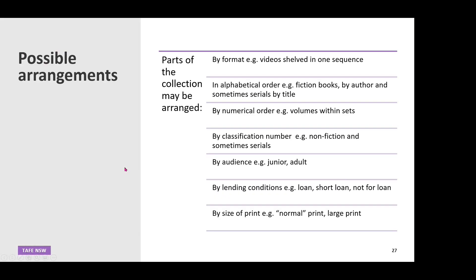There are more shelving arrangement options: you can do it by format, in alphabetical order, by numerical order, by classification number, by audience, lending conditions, or size of print. These are options for how you could arrange books in a library, and it's a decision made by library staff influenced by the needs of your community.